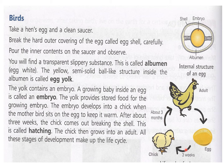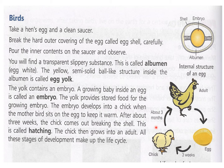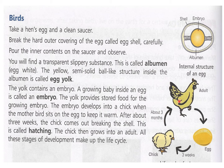The breaking of the shell and coming out of the chick is called hatching. The chick then grows into an adult. It grows into an adult hen in about 3 months. In humans, a baby becomes an adult in about 18 years, but a hen grows into an adult in only 3 months. From birth to death is the life span, and from birth till becoming an adult is the life cycle.